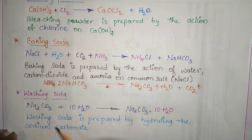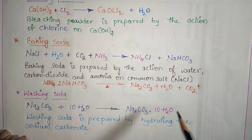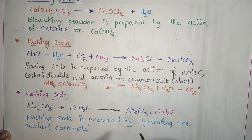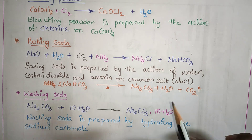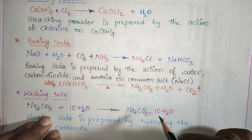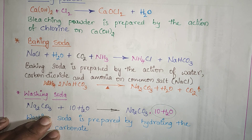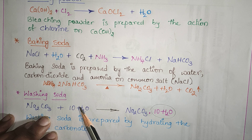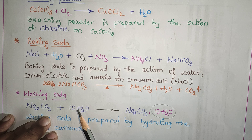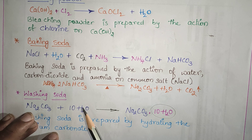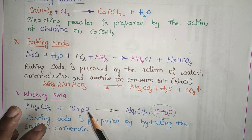The next salt is washing soda, which is sodium carbonate (Na₂CO₃). When water is added to sodium carbonate we get hydrated sodium carbonate, which forms crystals — sodium carbonate crystals — called washing soda (Na₂CO₃·10H₂O). The 10H₂O is called the water of crystallization. Washing soda is used in glass, soap, and paper industries; as a cleansing agent; and for removing permanent hardness of water.